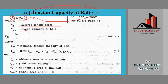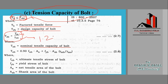The design tension capacity of the bolt is: Tdb = Tnb / γmb, where Tnb is the nominal tensile capacity of the bolt and γmb is the partial safety factor, taken as 1.25. This value of 1.25 is given in Table 9 of IS 800-2007.